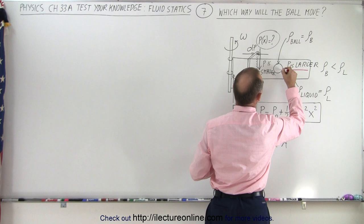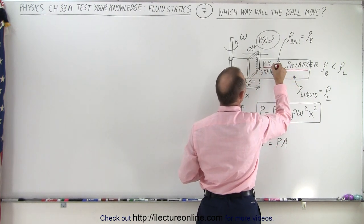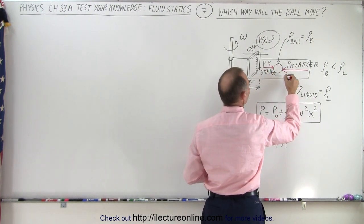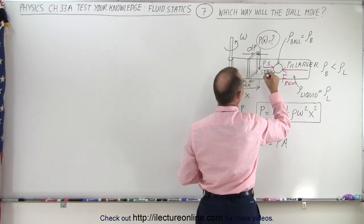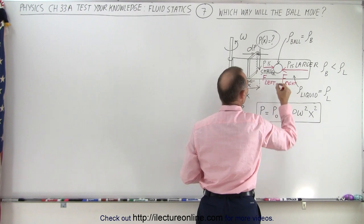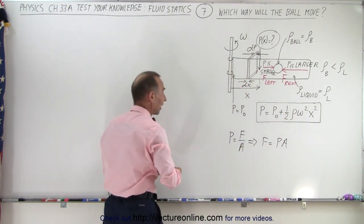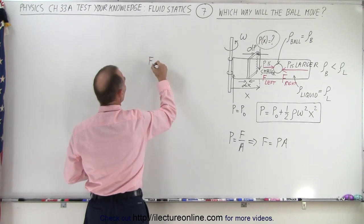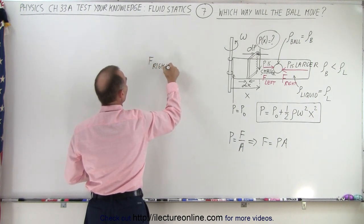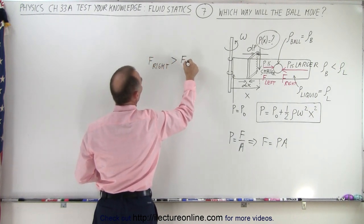So here we have a larger force on the right side, and we have a smaller force on the left side. So F on the right, and we have F on the left. And because the pressure is greater on the right side, therefore the force will be greater on the right side. So the force on the right is going to be greater than the force on the left.